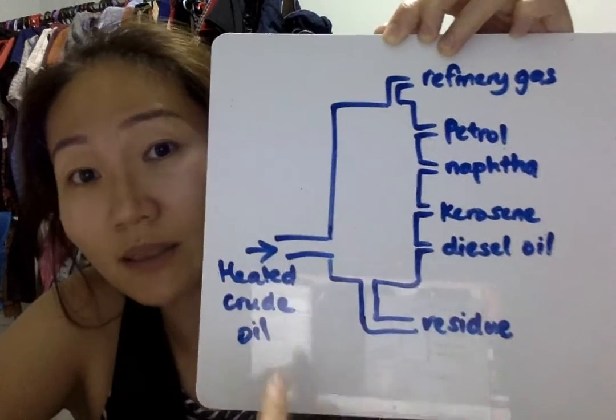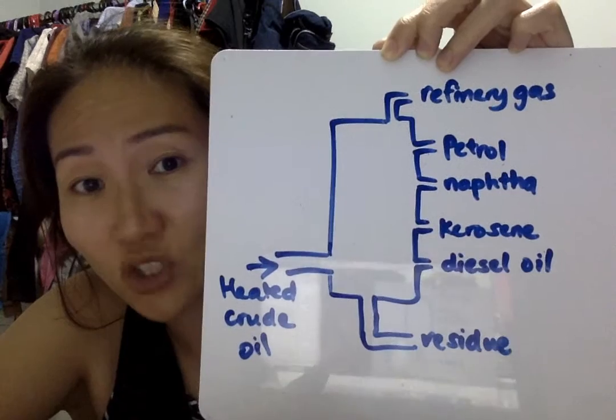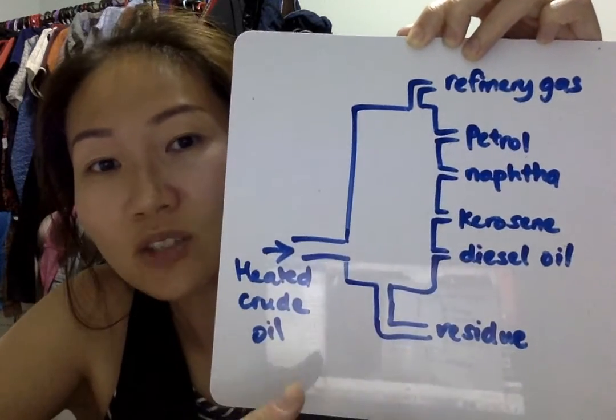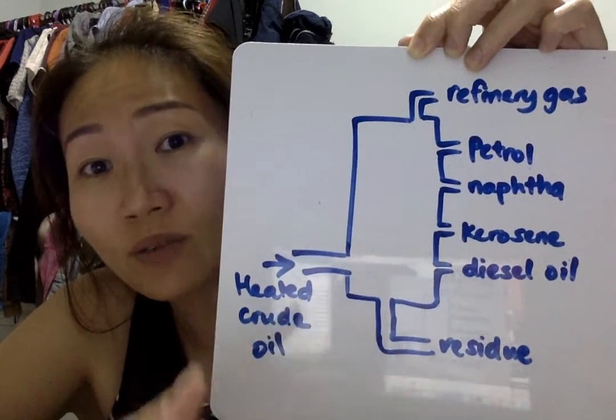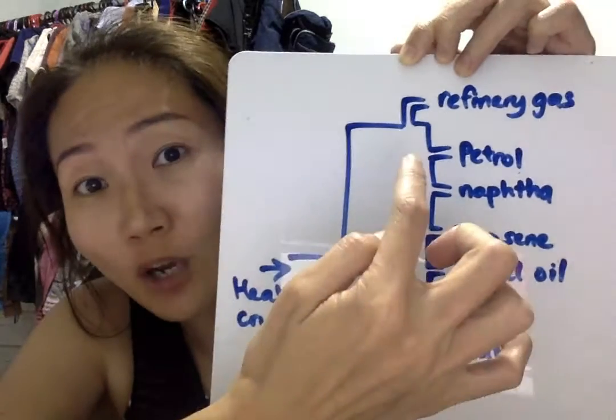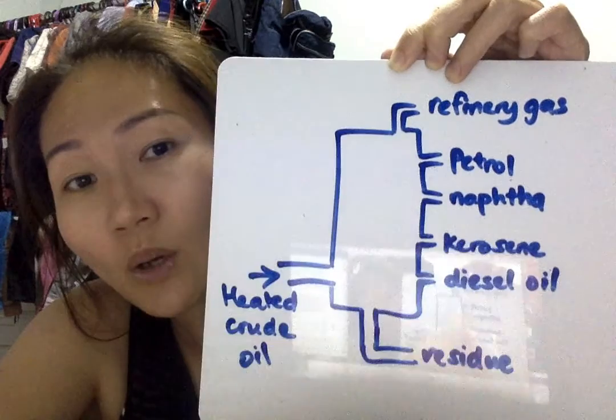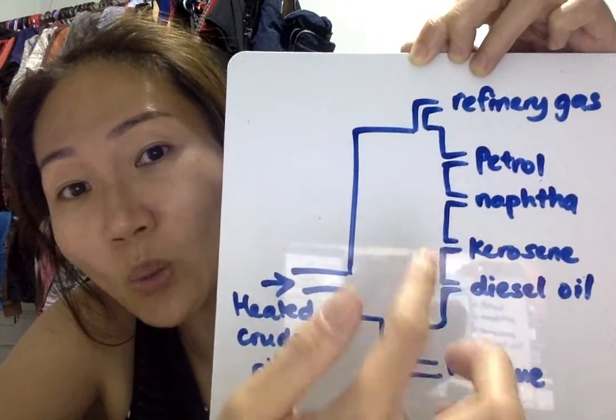In this question, you're supposed to explain that crude oil is a mixture. You're supposed to heat the mixture, and the mixture will be separated according to their boiling point range. The lighter fractions are collected at the top because they condense at the top of the fractionating column, while the heavier fractions condense at the lower parts of the fractionating column.